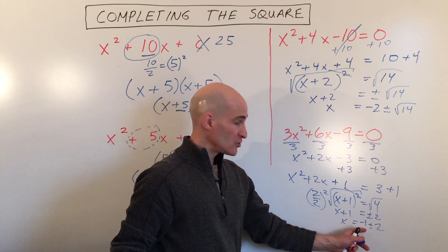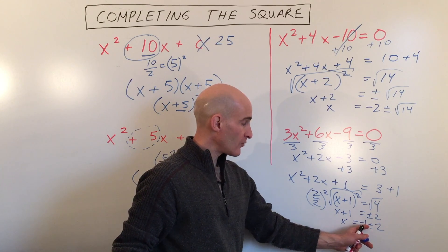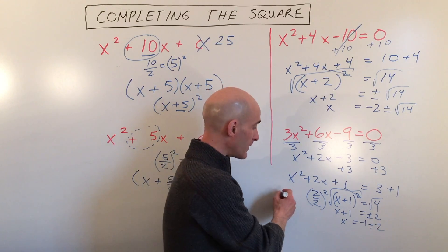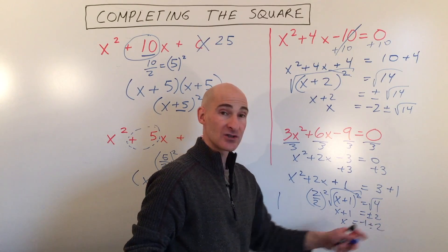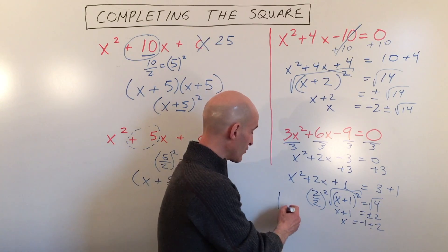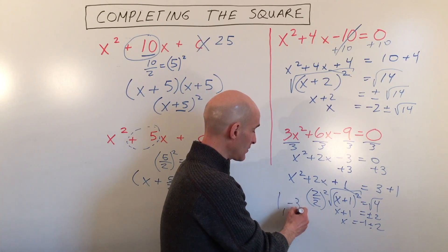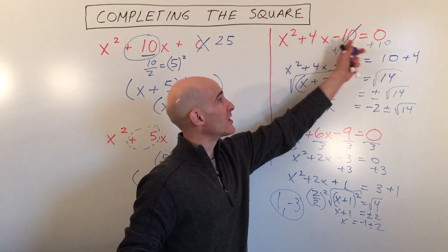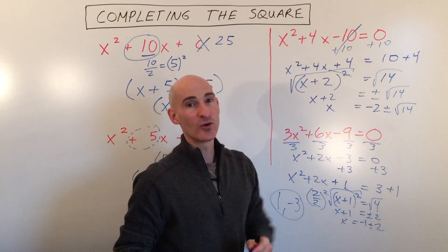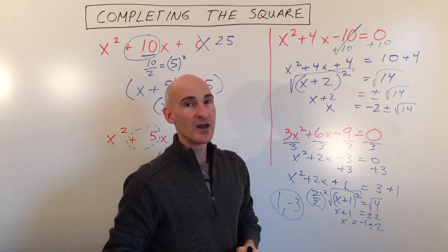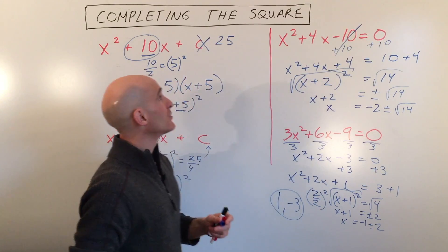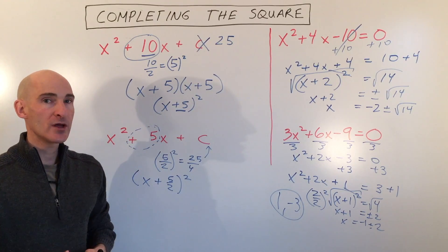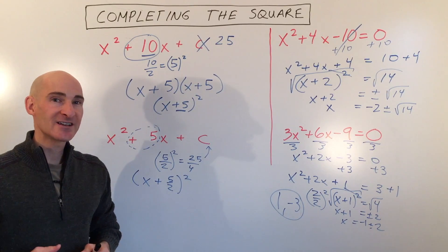So two solutions: negative 1 plus 2, which is 1, and negative 1 minus 2, which is negative 3. Those are your two solutions that will make this equation equal to 0. This is how you complete the square. Go ahead and take a look at the video again if you want to review it. I'll see you in the next video.